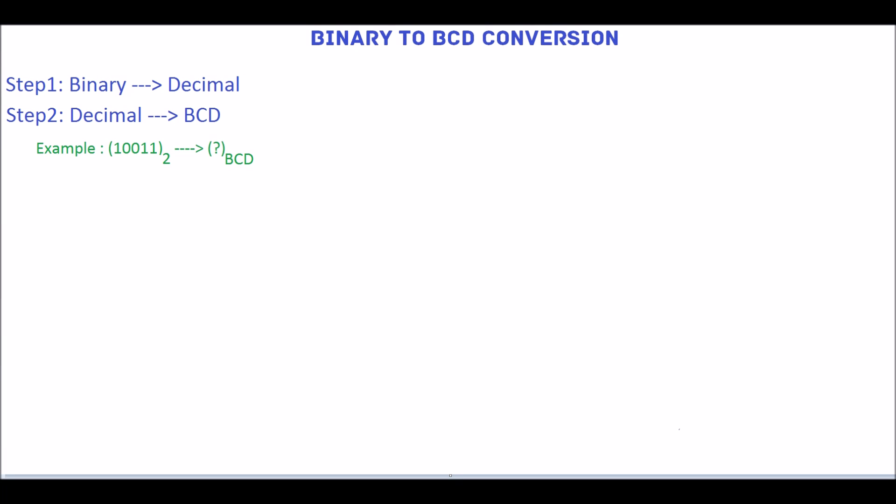In this tutorial, I am going to talk about binary to BCD conversion. This conversion can be done in two steps. In the first step, we have to convert the binary number into its equivalent decimal number. In the second step, we have to convert the decimal number into its equivalent BCD.